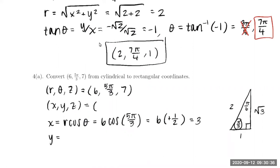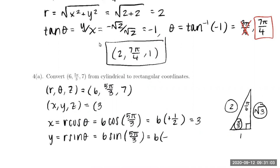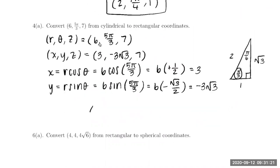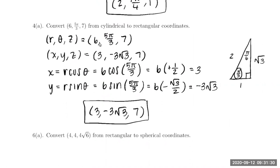Let's also find the y coordinate, which is r sine theta — 6 times sine of 5π/3. As stated, 5π/3 is in the fourth quadrant, and since sine is the y coordinate, that's going to be negative. Looking at the reference triangle, sine is opposite over hypotenuse, giving √3/2. So this gives a y value of negative 3√3. And z is z, so z equals 7. Our final answer is (3, −3√3, 7) in rectangular coordinates, which is identical to (6, 5π/3, 7) in cylindrical coordinates.